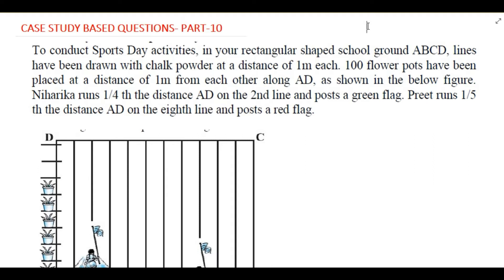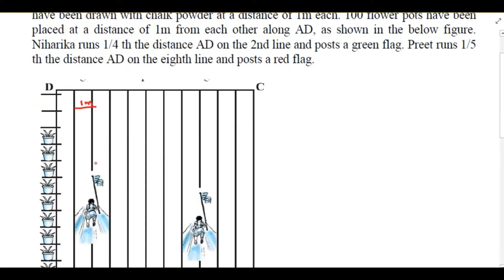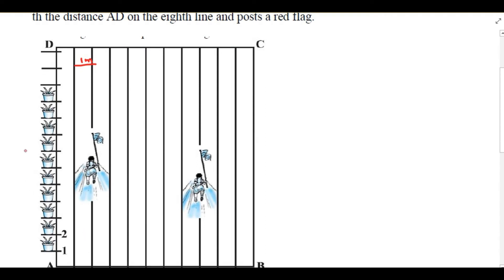Hello everyone. In today's video I'll be discussing a case study based question from the chapter Coordinate Geometry for Class 10. To conduct sports day activities in your rectangular-shaped school ground ABCD, lines are drawn with chalk powder at a distance of one meter each. 100 flower pots have been placed at a distance of one meter from each other along AD, as shown in the figure.